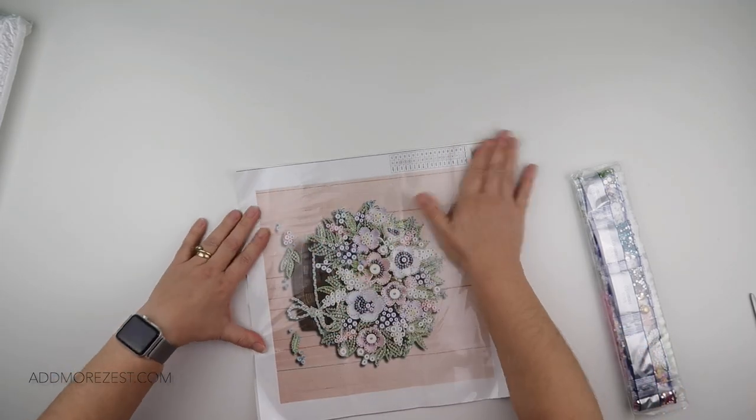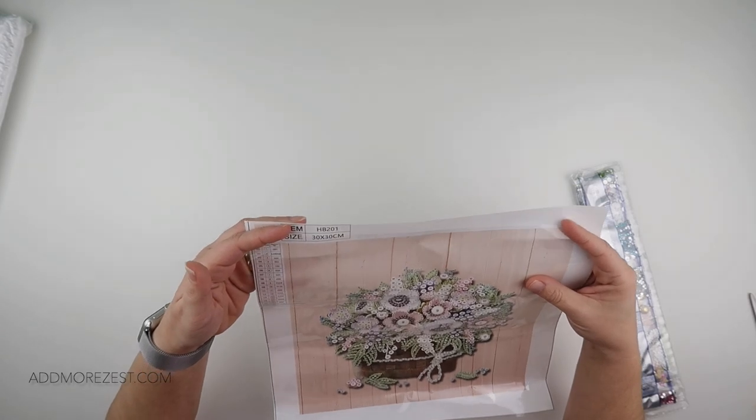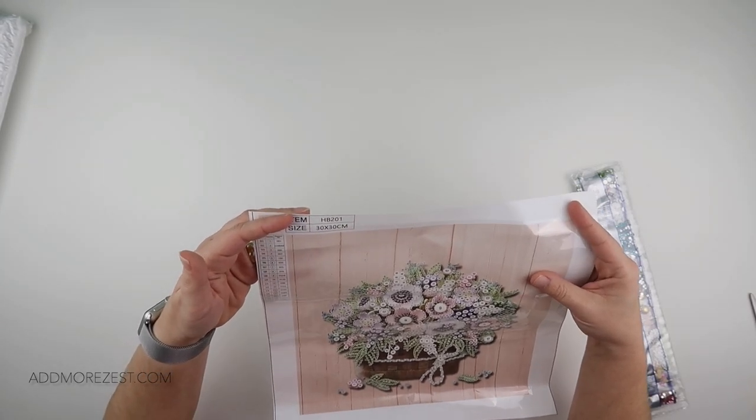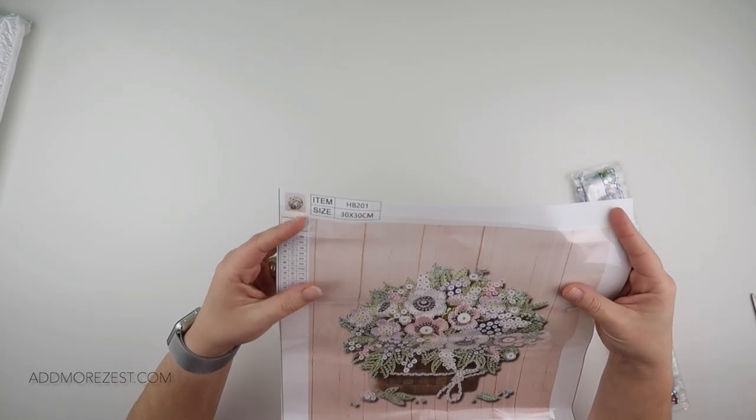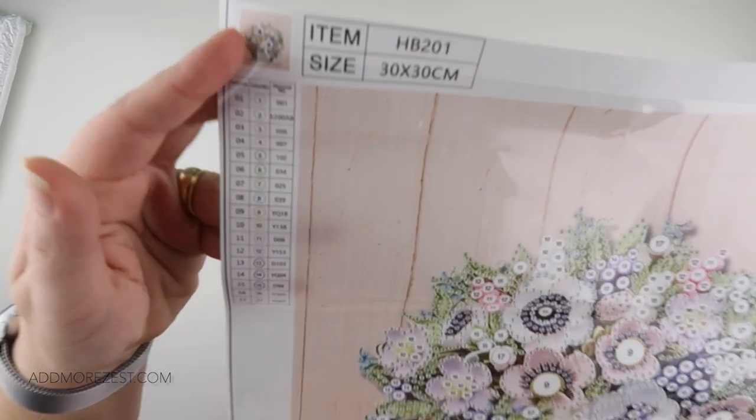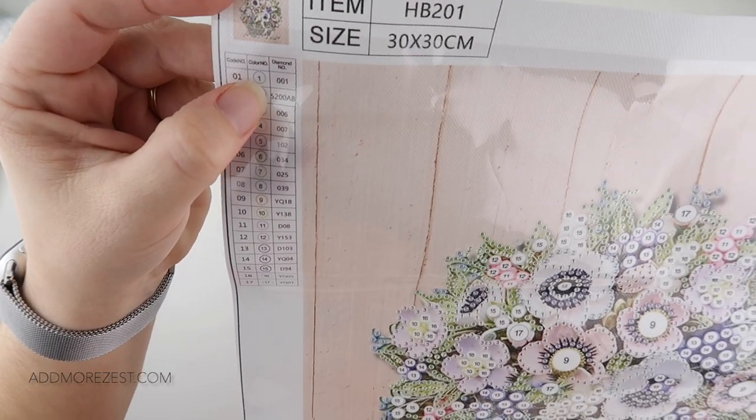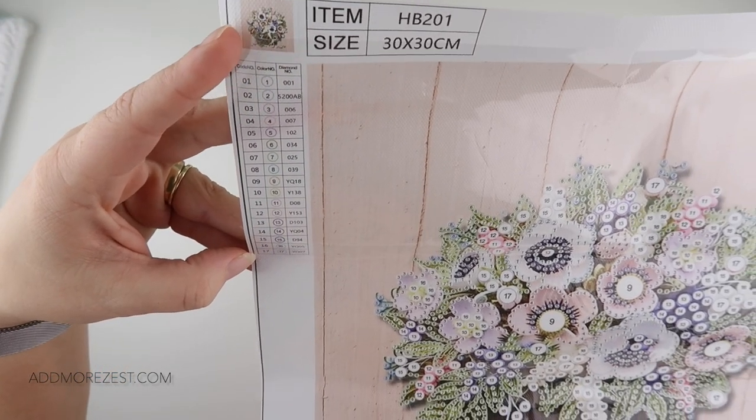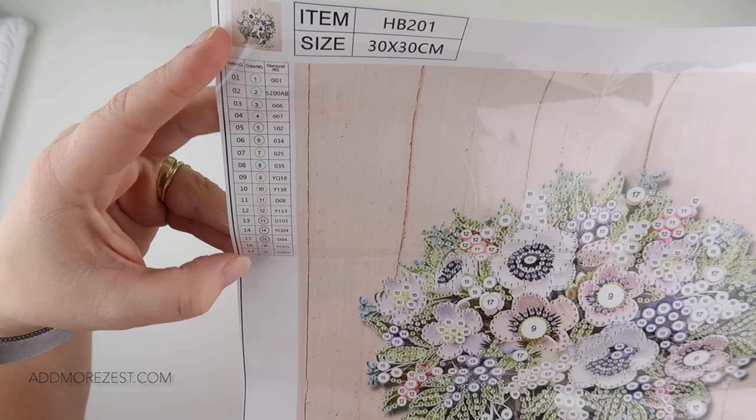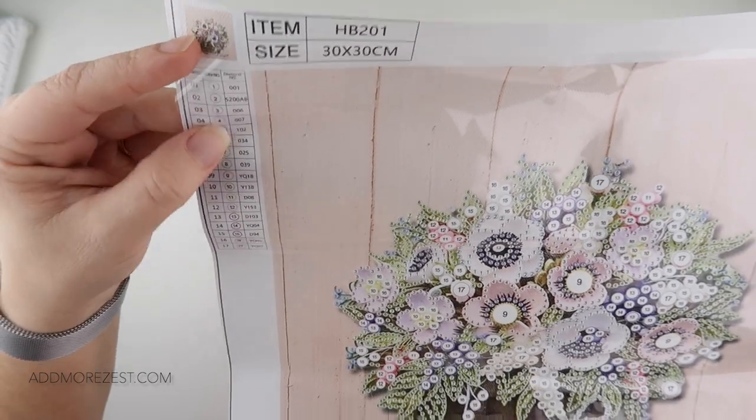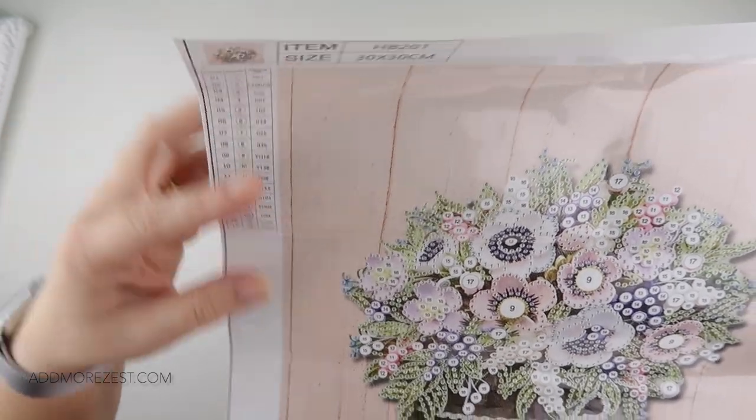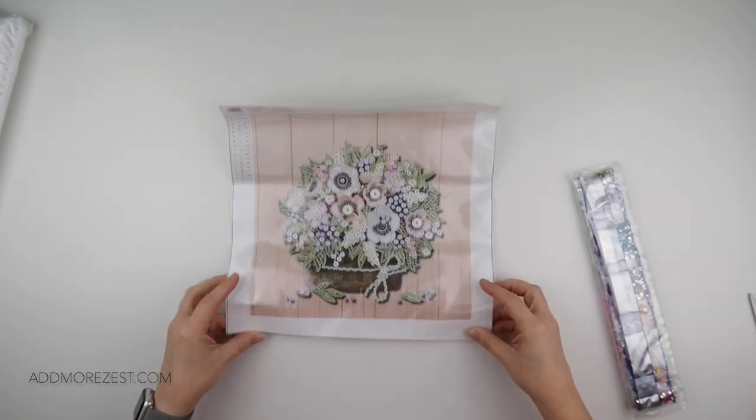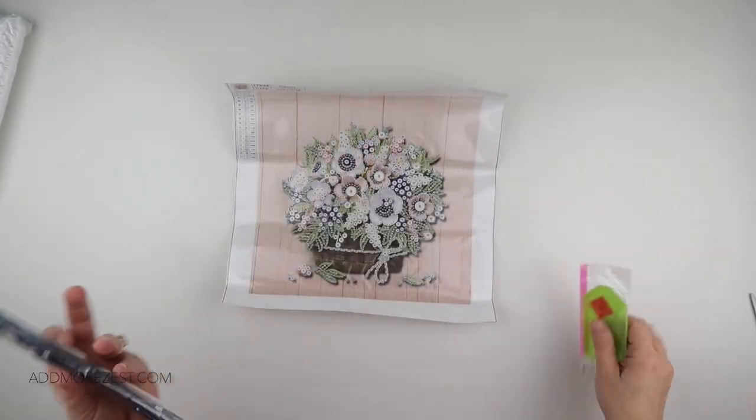Now some of them, not all of them, I think one of them actually has a DMC number. So if you look here we've got 5200AB. 5200 is a DMC color. The rest they either seem to use their own color or sort of a rhinestone type number. Some companies are quite different when it comes to rhinestones and how they label them.